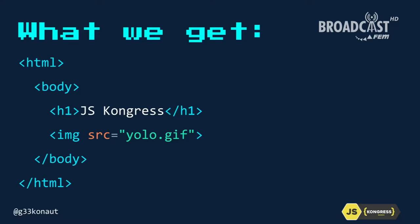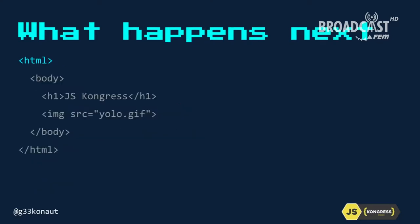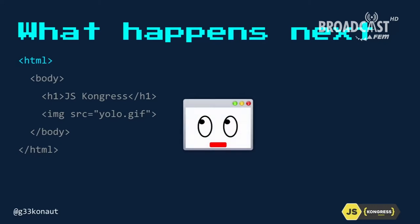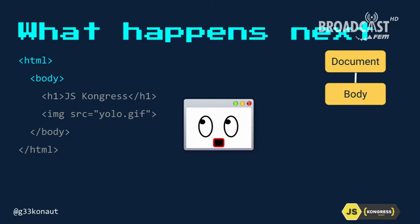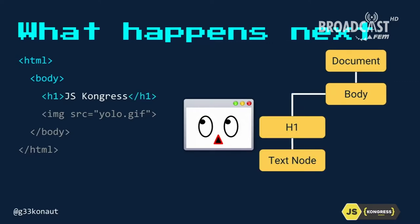As it comes in, the browser gets its HTML interpreter to kick in. It sees: there's a document, it has a body, there's an H1 element with some text — great. And now there's an image, so it has to download that in the background. Many image formats have the dimensions in the first couple of bytes, so the browser can figure out how large the image is going to be and use that information later.